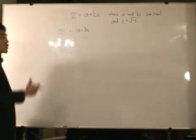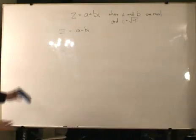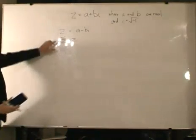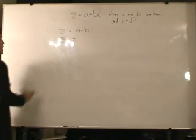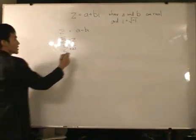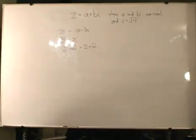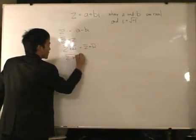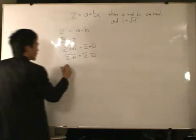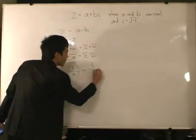There are a few rules about the complex conjugate. First, if you take the conjugate of Z and then take the conjugate of that, you get the same number. Second, Z plus W — the conjugate of that is the same as Z conjugate plus W conjugate. Third, when you multiply, it's Z conjugate multiplied by W conjugate. And last, one over Z conjugated equals one over Z conjugate.